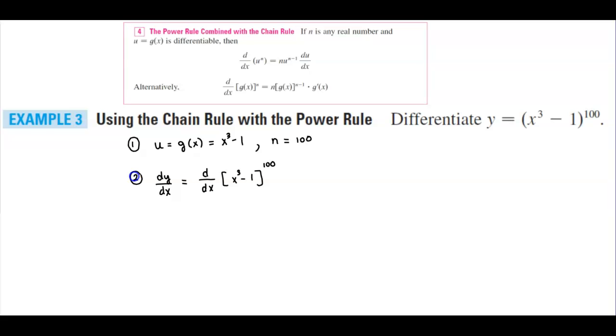So if we look at that formula above, that means that we need to take n and multiply it by g of x to the n minus 1 times g prime of x.